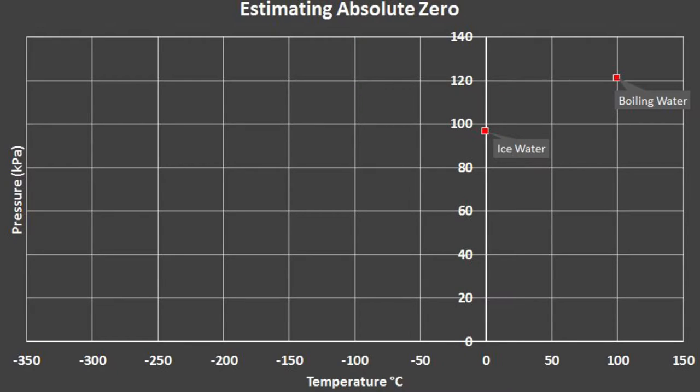Let's look at these two points on a graph. Assuming a linear relation between pressure and temperature, like the ideal gas law, we would expect an additional data point to fall on a line connecting these first two points.